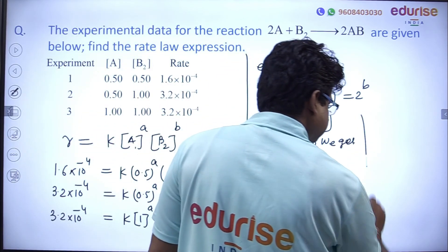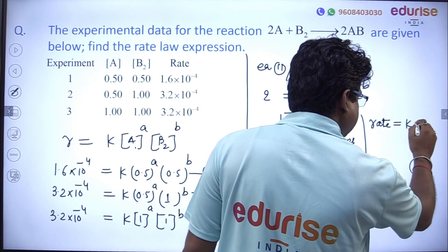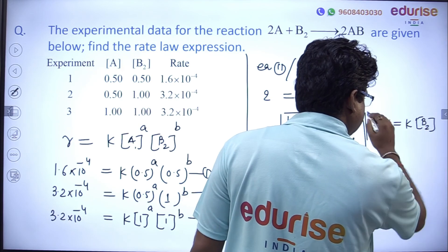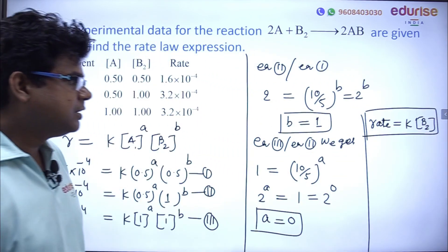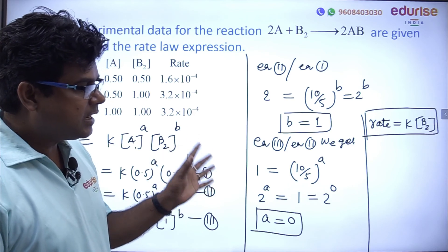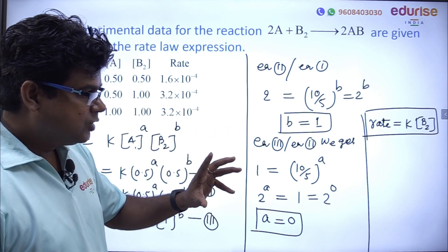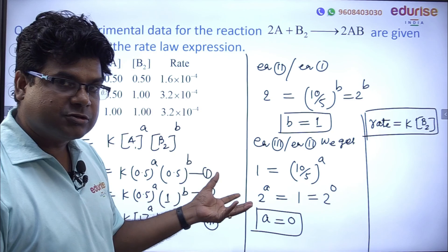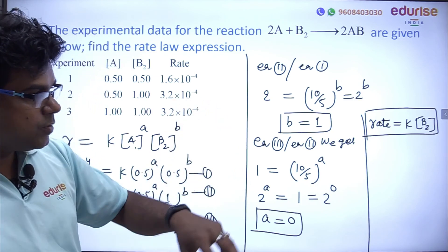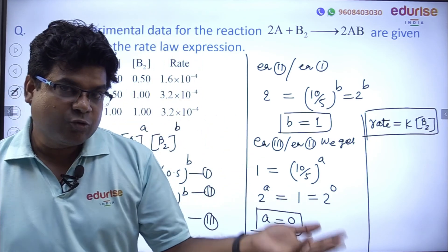So the rate law expression is: rate = k[B₂]. This is the rate law expression. Students, I have given you all these questions because this type of question appears every year in the exam. No matter how the question is twisted, with this concept you can solve it. You have got a rough idea — the more you practice, the more your confidence level will increase.